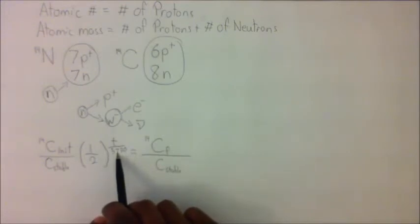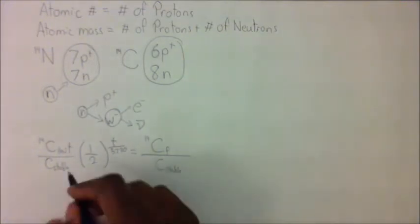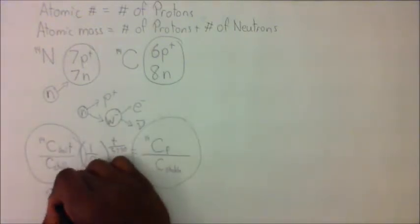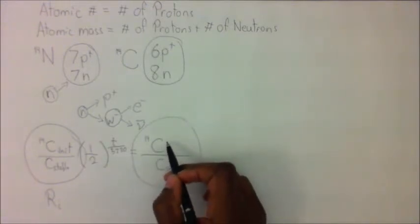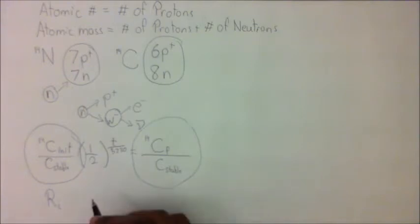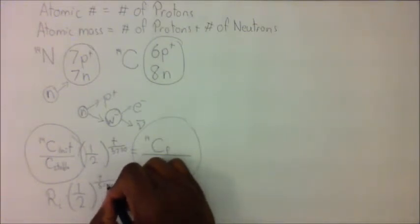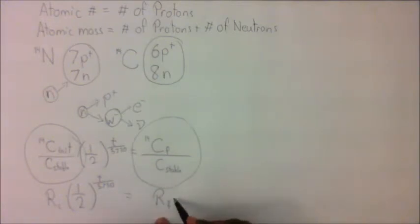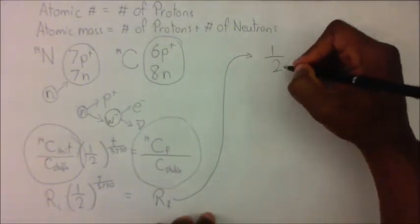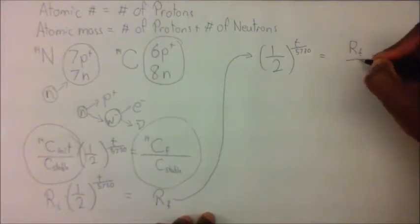If T is twice as big as 5730, well, that becomes half squared, which is a quarter. So we have that exponential decay, so we know that this is accurate. But what I'm going to do to make this easier, I'm going to call this R sub I, because mind you, the carbon stable, as its name implies, is going to stay constant. So the only thing that changes is the carbon-14 times half raised to the T over 5730 is equal to R sub F. And that's just a ratio initial, and R sub F is a ratio that's final, which is what we'll be measuring. So now I'll divide by R sub I and I'll get half raised to the T over 5730 is equal to R sub F over R sub I.